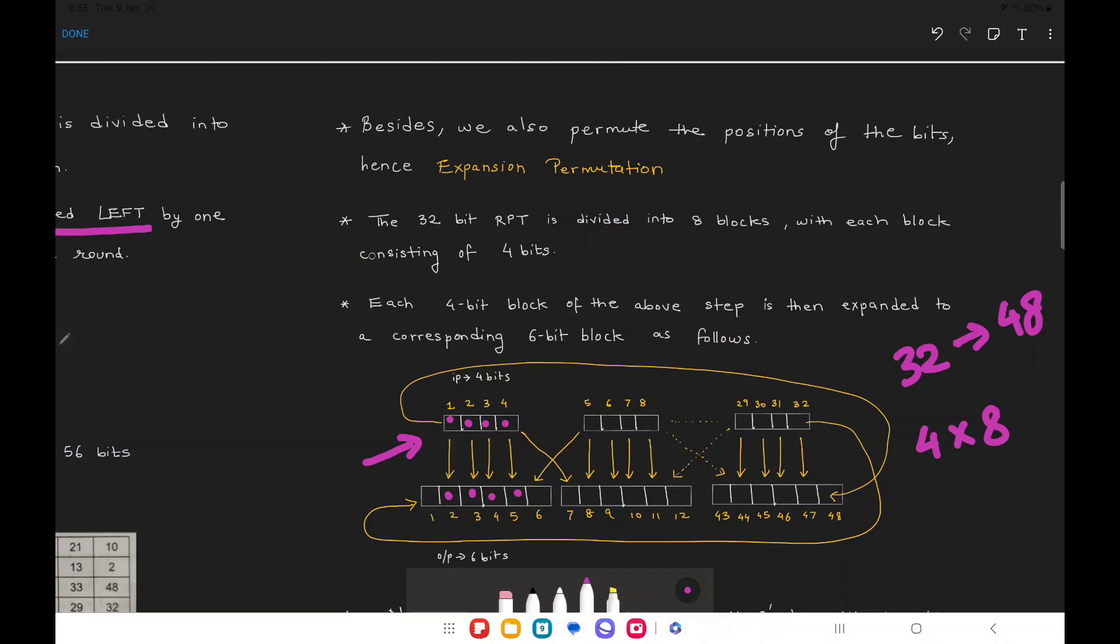Similarly, in the next block (block number two), we are going to copy bit numbers five, six, seven, and eight into positions eight, nine, ten, and eleven respectively. Positions seven and twelve are going to be filled using a pattern. This process continues till positions 29, 30, 31, and 32, which are copied into 44, 45, 46, and 47 respectively.